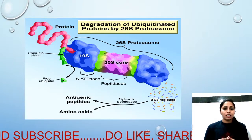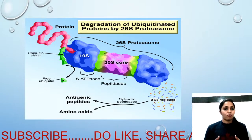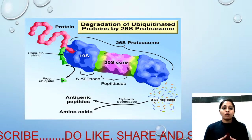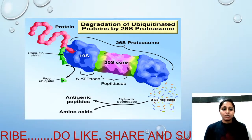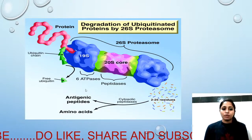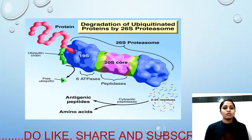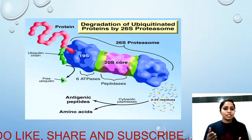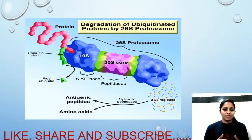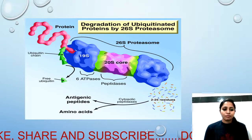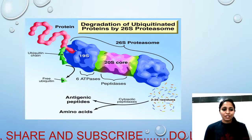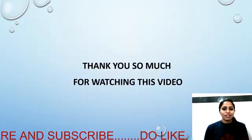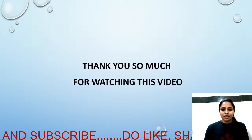These peptide fragments can be further processed: the amino acids released can be used for new protein formation, for energy processes, or fed into the urea cycle. The small peptides can also serve as antigenic peptides presented by the immune system. This completes the overview of protein degradation via polyubiquitination and the 26S proteasome. Thank you for watching.